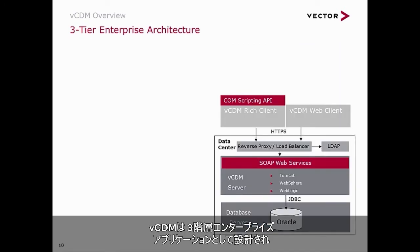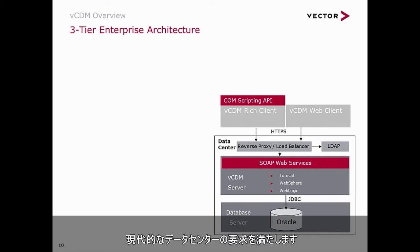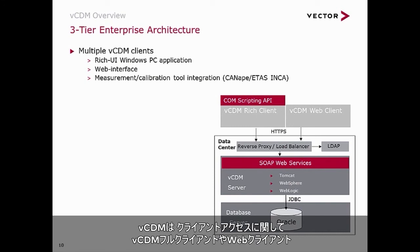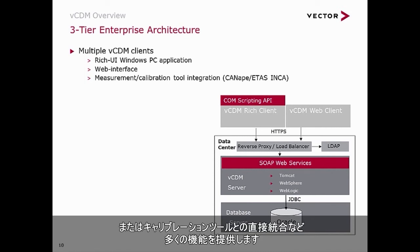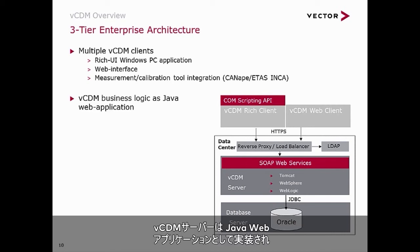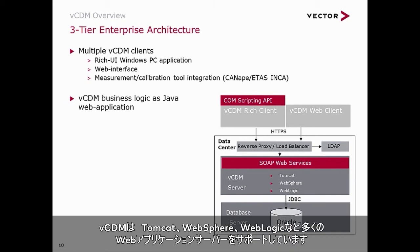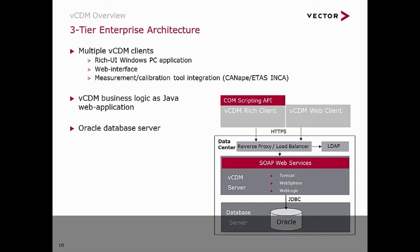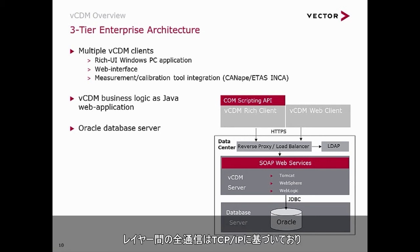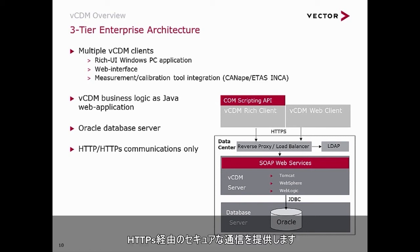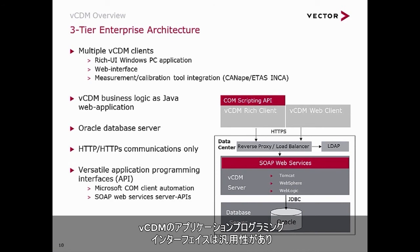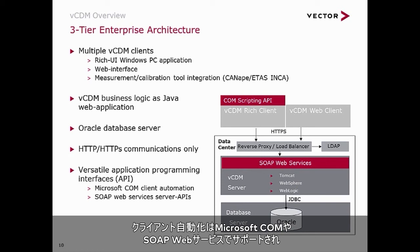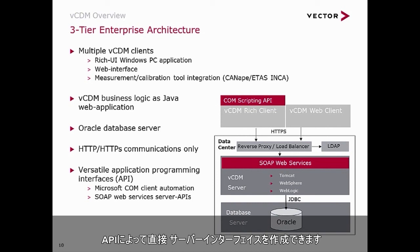VCDM is architected as a three-tier enterprise application and fulfills the requirements of modern data center regulations. VCDM offers many possibilities for client access: the VCDM full client, the web client, or directly with the calibration tool. The VCDM server is implemented as a Java web application and supports many web application servers such as Tomcat, WebSphere, or WebLogic. An Oracle database stores all data — VCDM 5.6 supports Oracle version 12. All communications between the layers are based on TCP/IP and offer secure communications via HTTPS. VCDM also provides a versatile API: client automation is supported via Microsoft COM, and web services APIs enable direct server interfaces.